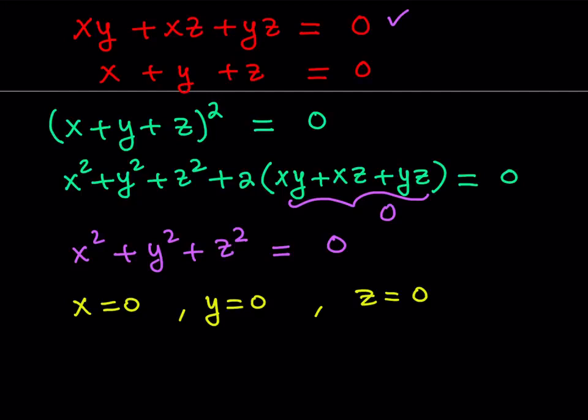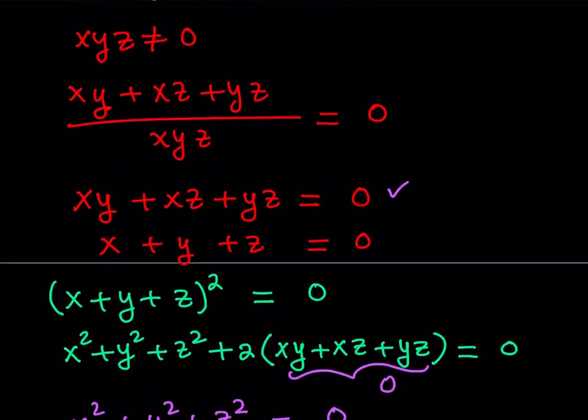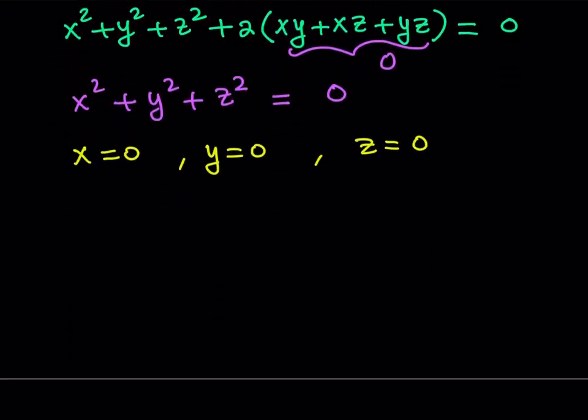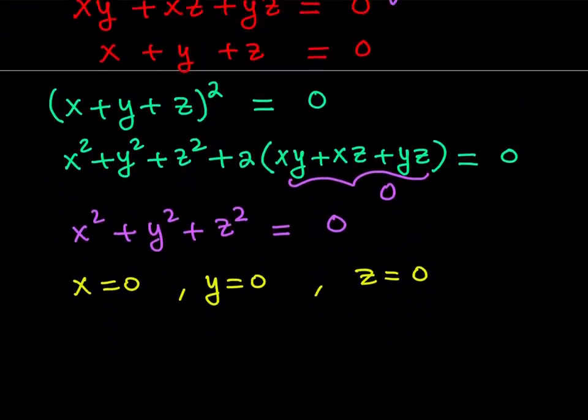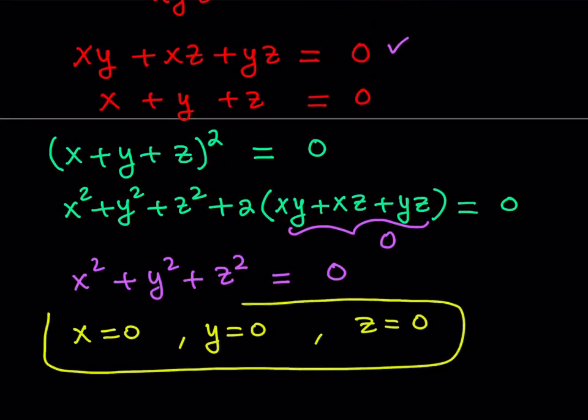But guess what? We had a condition, right? We had some restrictions. We said that xyz as a product can never equal 0, which means none of these numbers can be 0. But we arrive at the conclusion that they're all 0, but that's a contradiction. I mean, this solution here would be fine if we didn't have that restriction, but we do. So what is that supposed to mean? It means that we have no real solutions to this system because it's just not going to work.